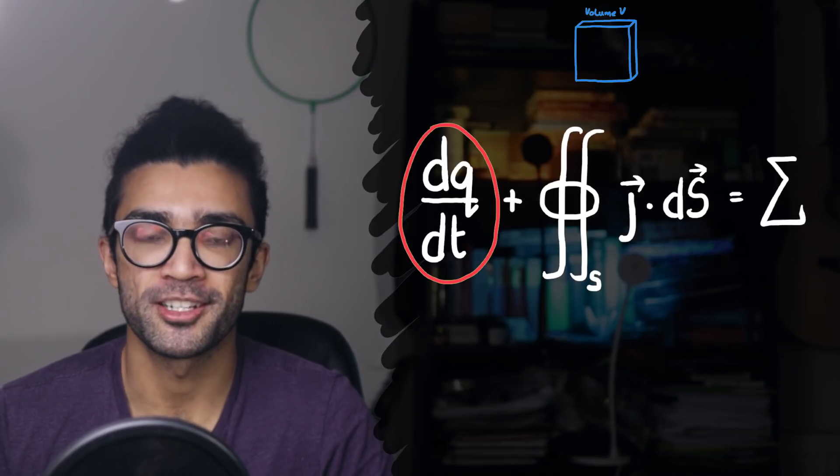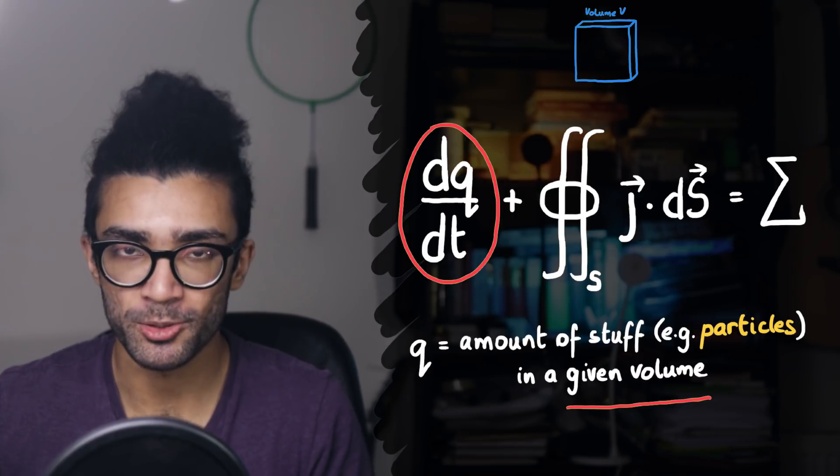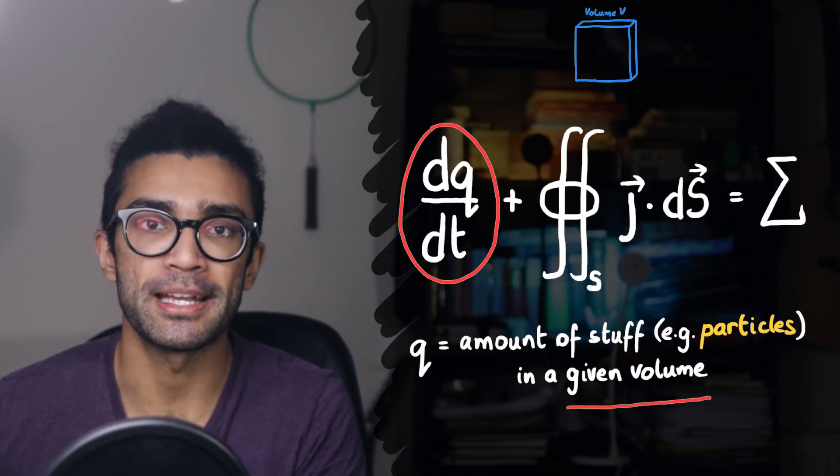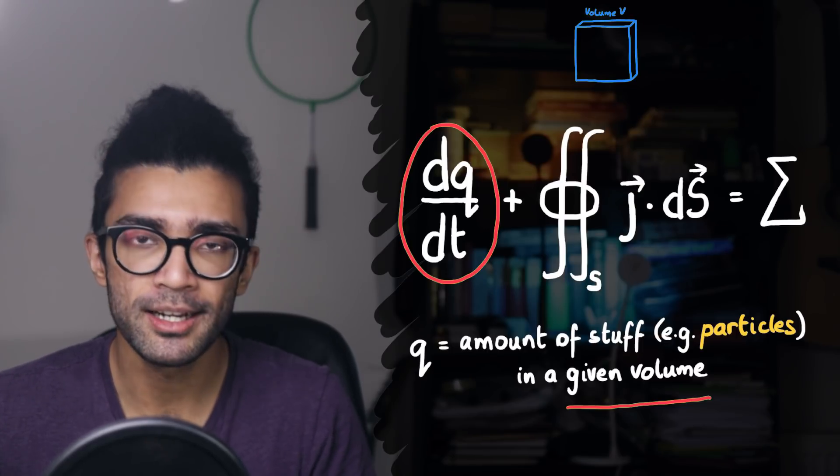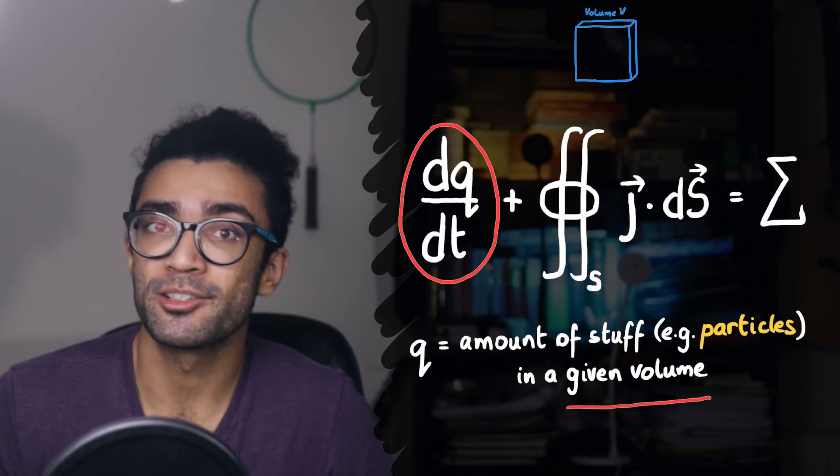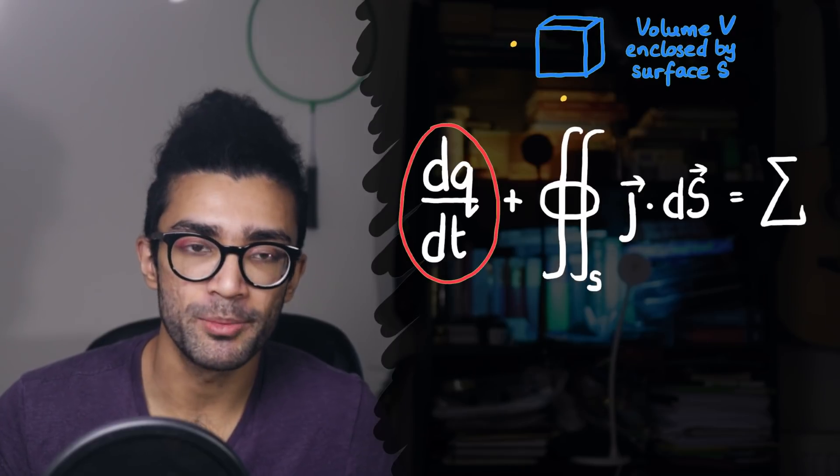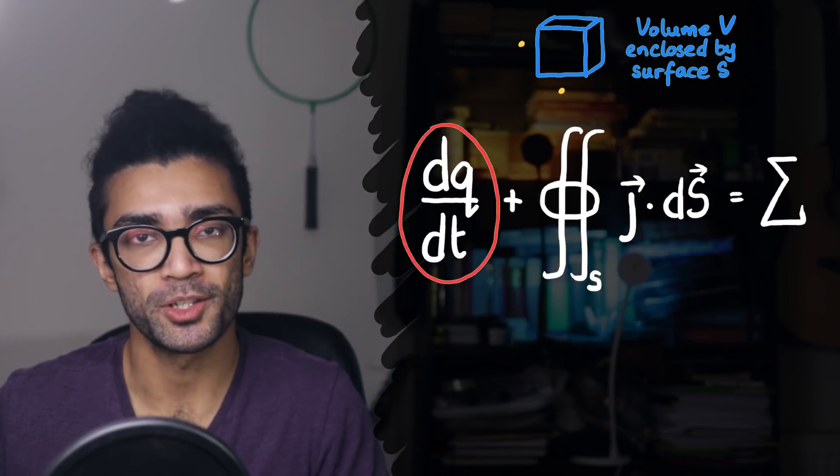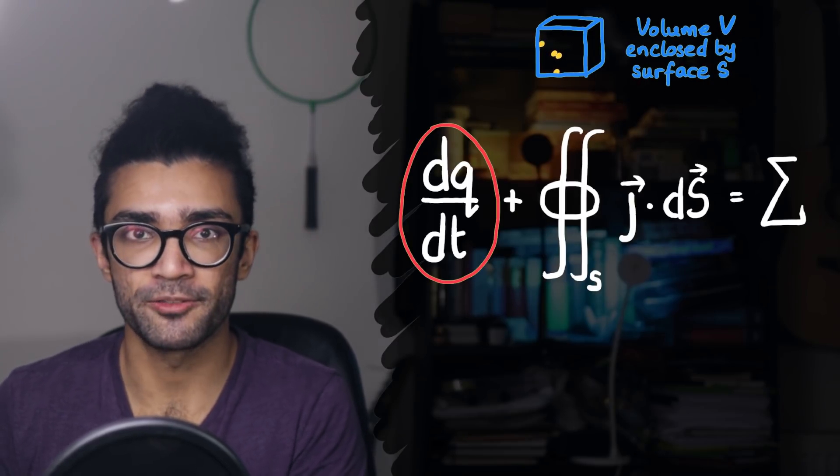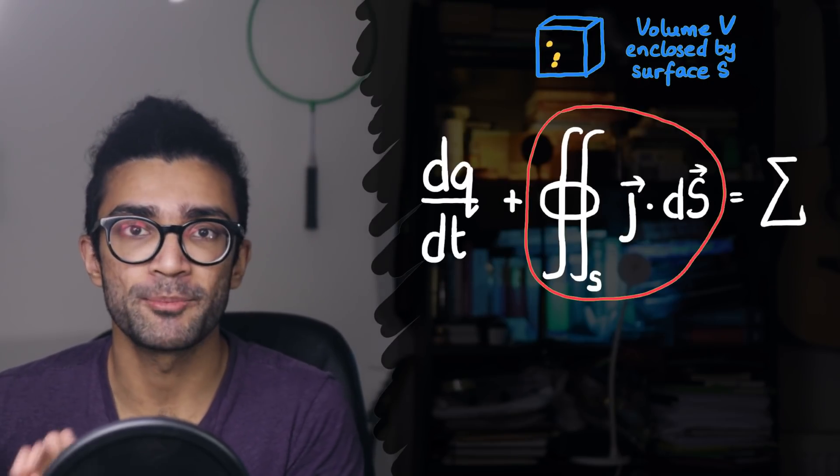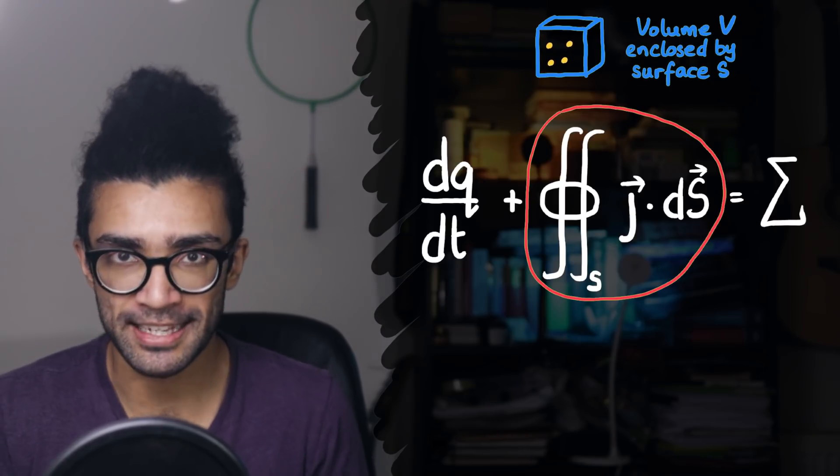Now, let's quickly go back to the first term in our equation. Remember that Q is representing, in this case, the number of particles in a particular region of space. I was very pedantic about saying region of space over and over again. Well, the important thing here is that the region of space we're considering is the region of space enclosed by the surface S. In other words, the first term is measuring the rate of change of the number of particles in our volume, which we can call V. And this volume is enclosed by the surface S. And the second term is simply measuring how many particles are entering or leaving that volume through the closed surface S.